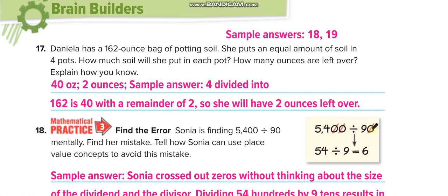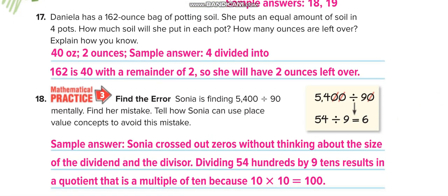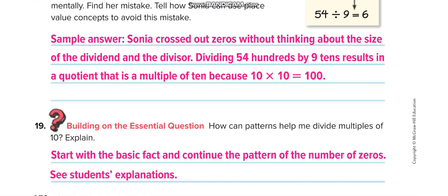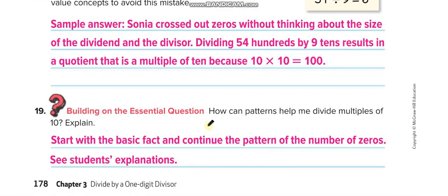Now what is the mistake in this question? The mistake is we can cancel only one zero, not two zeros, because there is only one zero in the divisor. So we put that one zero with the answer: 54 divided by 9 is 6, then bring the zero back — the answer is 60.